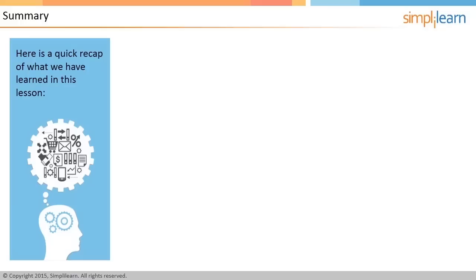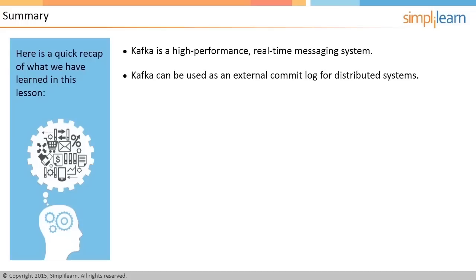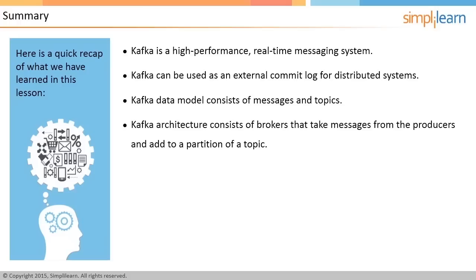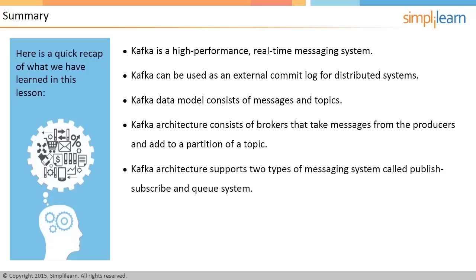Here is a quick recap: Kafka is a high-performance real-time messaging system. Kafka can be used as an external commit log for distributed systems. The Kafka data model consists of messages and topics. Kafka architecture consists of brokers that take messages from producers and add them to a partition of a topic. Kafka architecture supports two types of messaging systems — publish-subscribe and queue system. Brokers are the Kafka processes that process the messages in Kafka.